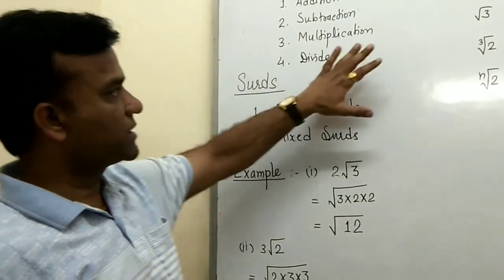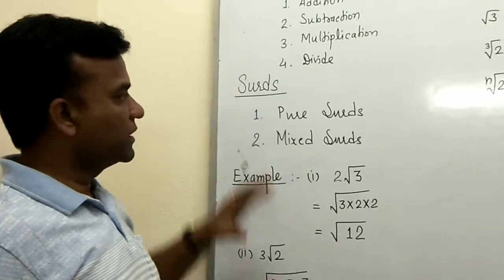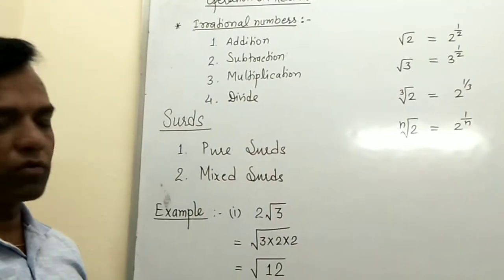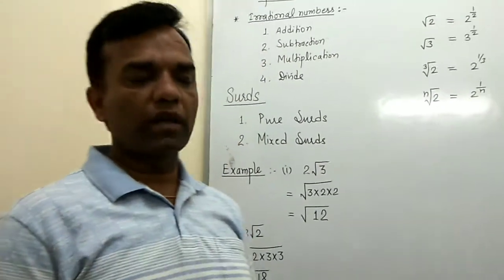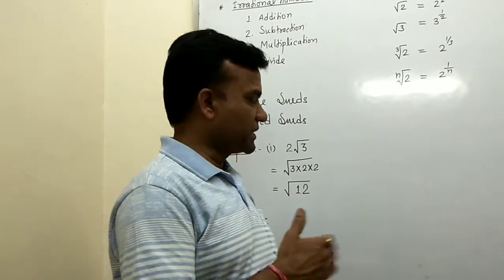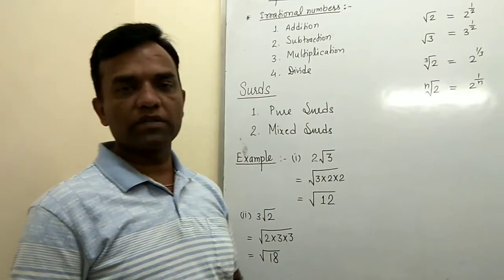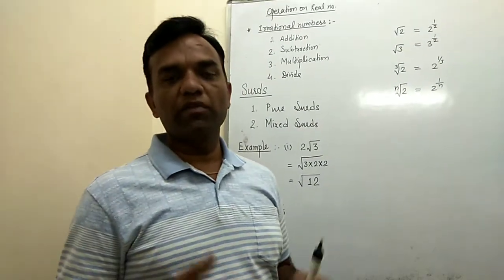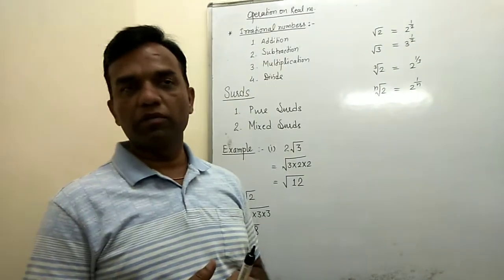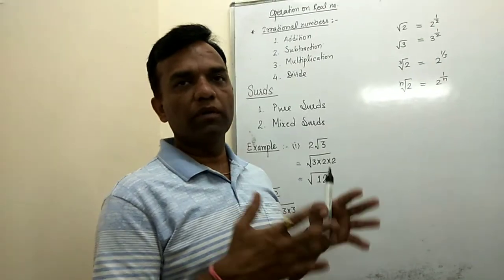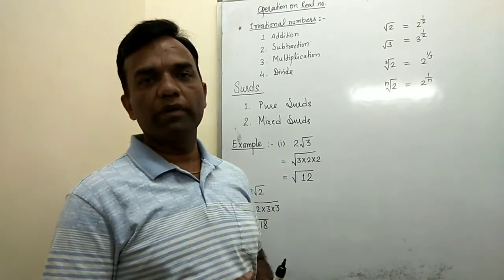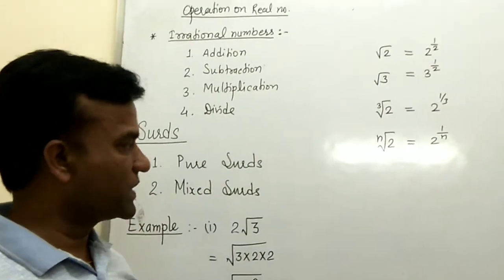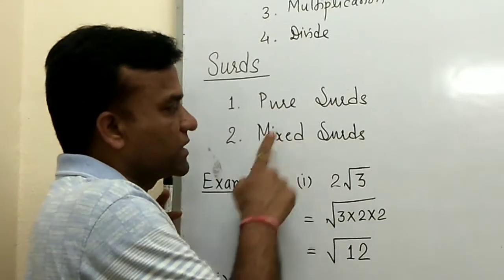This type of term is called a surd. Surds means you represent the number in radical form — using the square root sign, cube root sign, 4th root, 5th root, or nth root. Some operations are related to surds: the basic operations are addition, subtraction, multiplication, and division. Before starting operations, first understand the concept of rational numbers in radical or exponential form. We also discuss two basic types: pure surds and mixed surds.